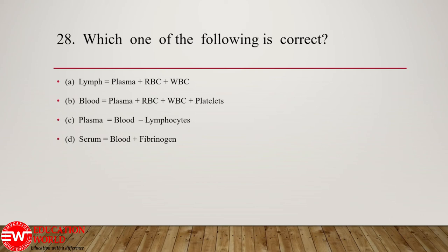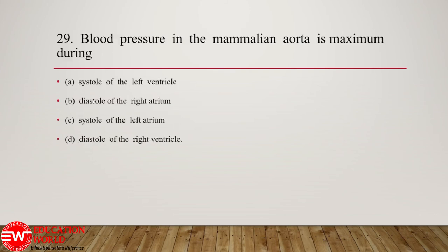Question number 28: which one of the following is correct? Lymph = plasma + RBC + WBC is incorrect because RBCs are not present in lymph. Blood = plasma + RBC + WBC + platelets — option B is correct because blood has fluid plasma and cellular components including RBCs, WBCs, and platelets. Serum is plasma minus clotting factors, hence option D is incorrect. Option C states plasma = blood minus lymphocytes, which is incorrect since blood minus all cellular components gives plasma. Hence option B is correct.